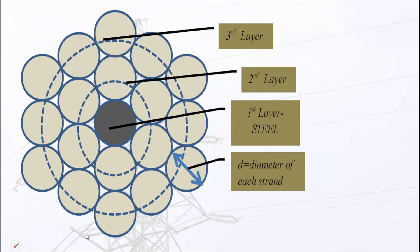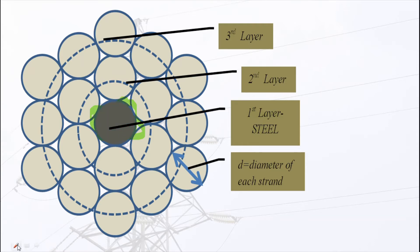Now see this diagram of the stranded conductor. You can see that it has three layers. The gray colored central strand is made up of a different material — steel — which improves the overall mechanical strength of the conductor. The outer two layers are made up of several aluminum conductors, and these aluminum conductors perform the main function of carrying current.